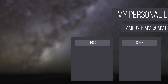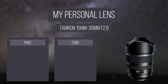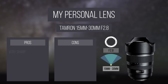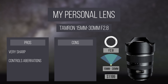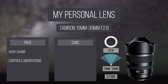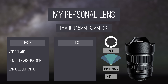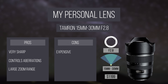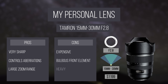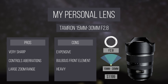Another great lens is the Tamron 15-30, which is also sharp and controls aberrations well. It is the lens I use personally, and because of its large zoom range, I only need one lens instead of one or two primes. It is expensive though, and because of its integrated lens hood, using filters requires the purchase of special mounts which are also expensive.